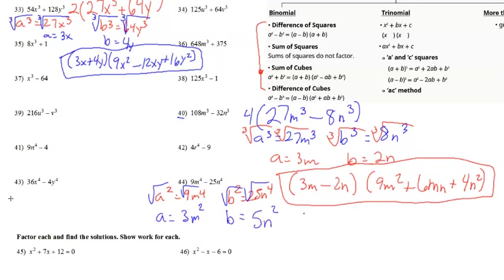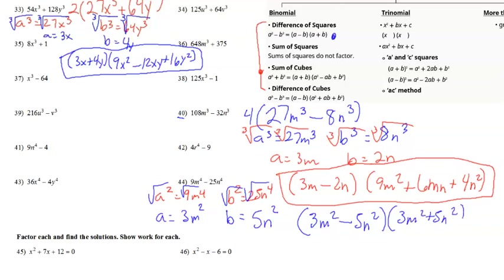Plugging into the difference of squares formula, we get (3m² − 5n²)(3m² + 5n²). These are your factors.